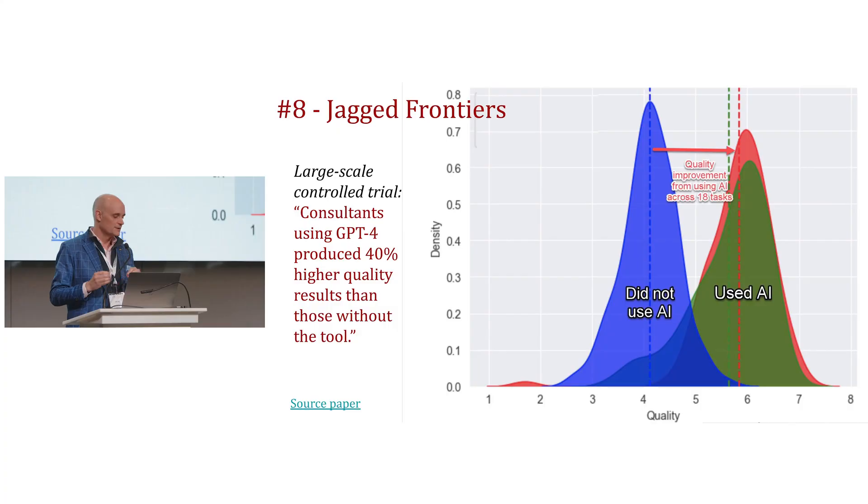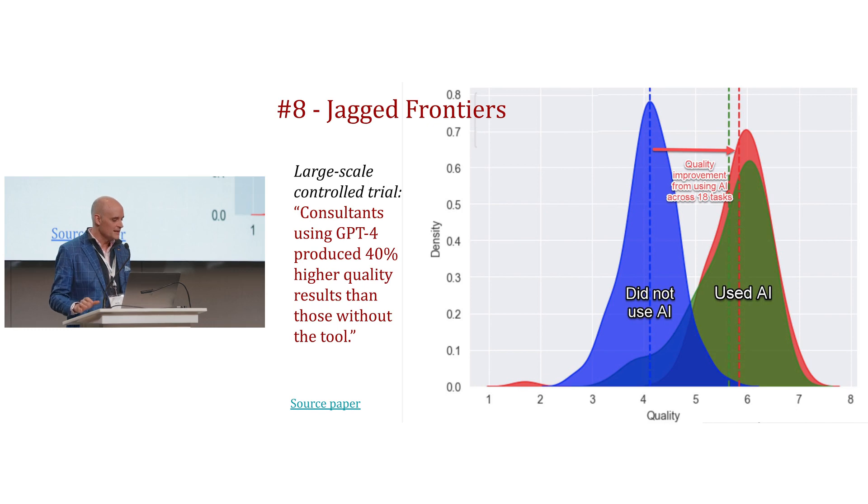Some really interesting things are happening in the business world. In a large-scale controlled trial by Ethan Mollick, consultants using GPT-4 produced 40% higher quality results than those without the tool. These are some of the first empirical studies suggesting that using generative AI can increase efficiency, productivity, and quality of work. This raises the question: if businesses not using it face competitive disadvantage, are schools disadvantaging the students in their care by not actively getting in and using it?